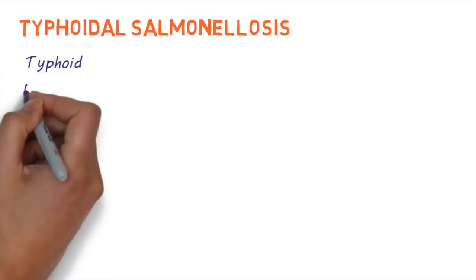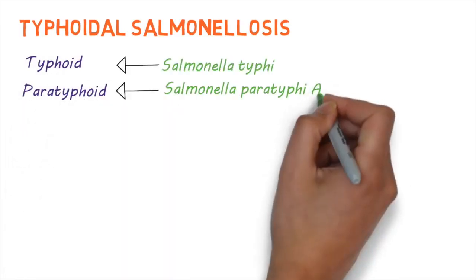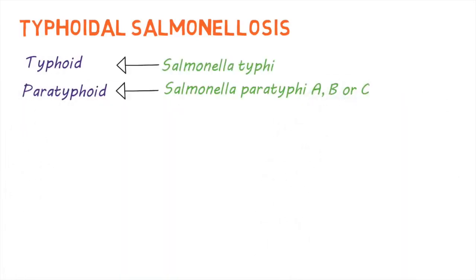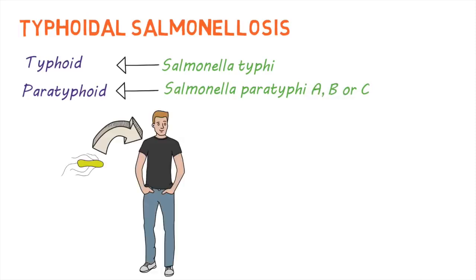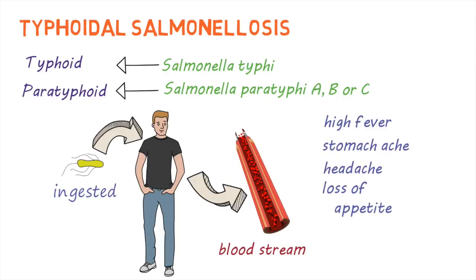Typhoid fever and paratyphoid fever are caused by either Salmonella typhi or Salmonella paratyphi A, B, or C. These two illnesses are similar. When these bacteria are ingested, they can enter the bloodstream leading to symptoms like high fever, stomach aches, headaches, loss of appetite, or a rash.